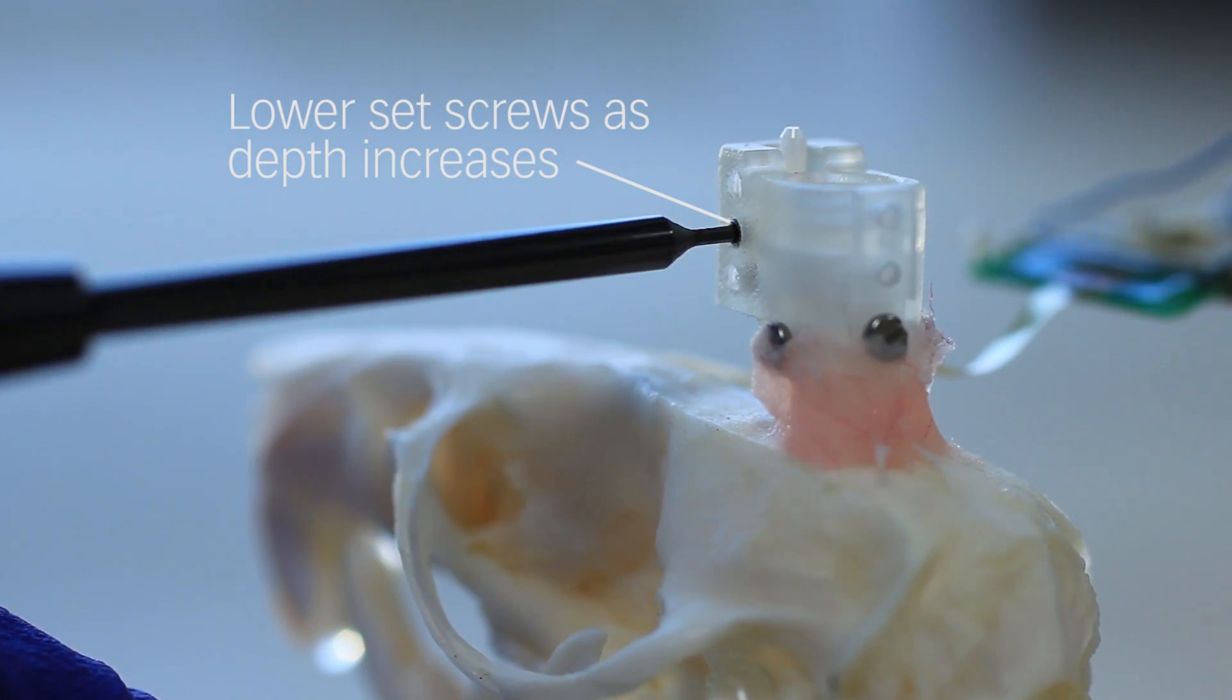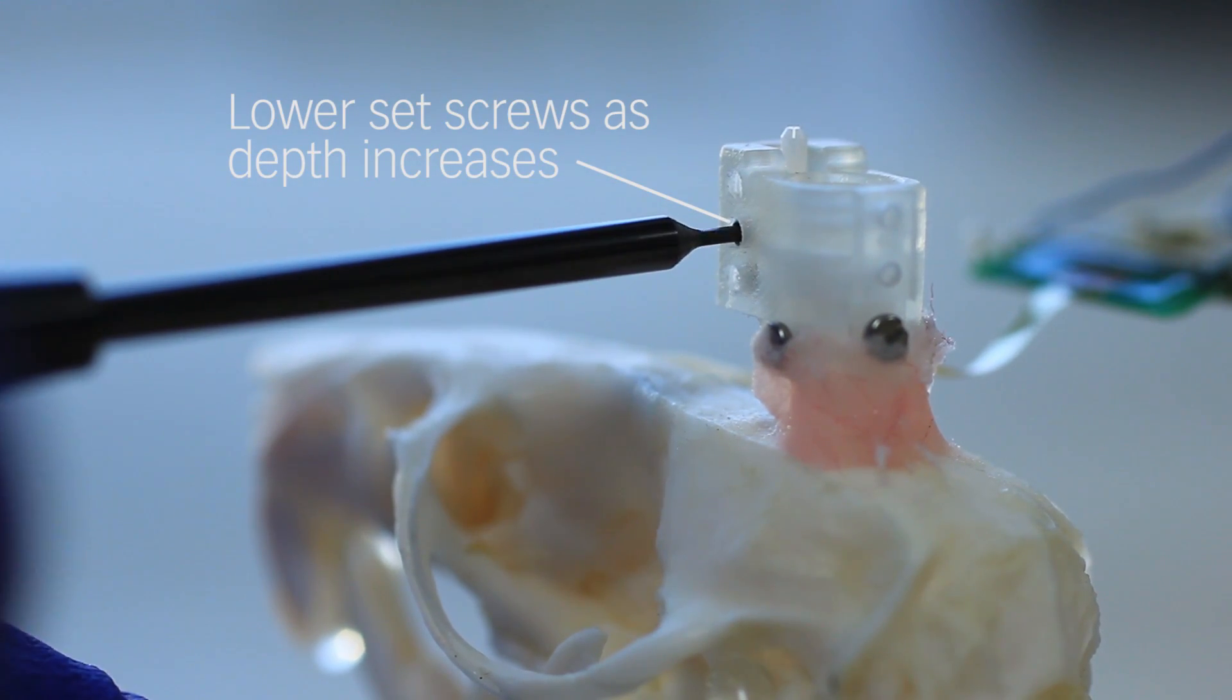Once probe depth is set, tighten the set screws to secure the ferrule housing at its new position. Both set screws must be engaged for optimal stability.